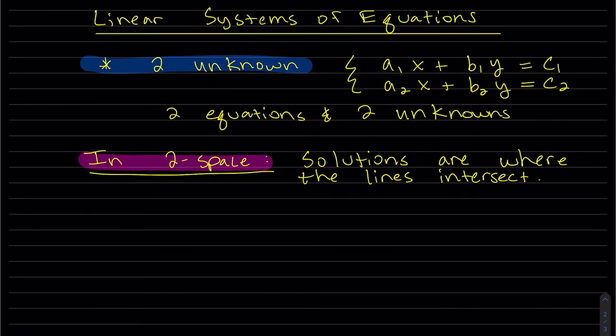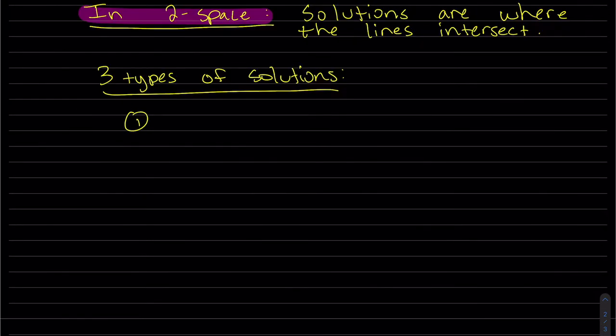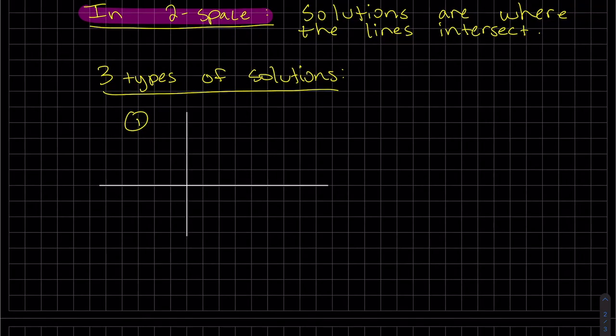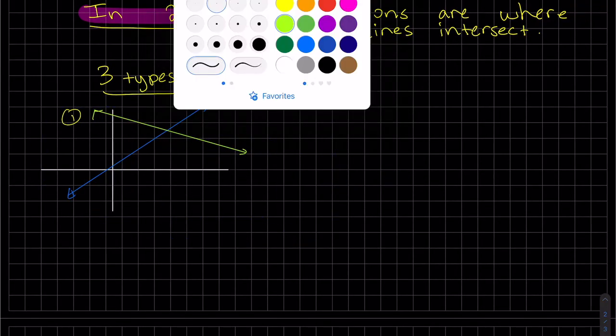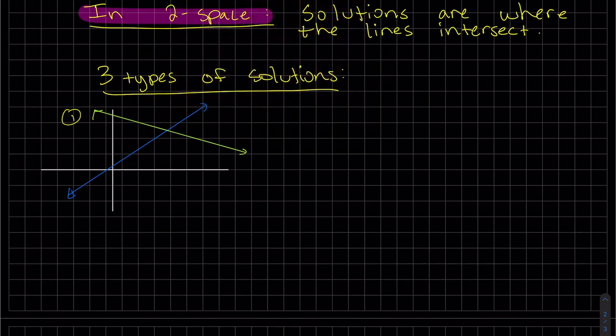So to find these solutions when we're in two space, R², the solutions are where the lines intersect. And this is just algebra one, but it's really helpful to understand what's going on looking at what we already know. So the most common type of solution: we can see if we have two lines, two equations, they most likely intersect at one point. And that point will be at (x, y). So my solution is the set {(x, y)}. And this is called consistent.